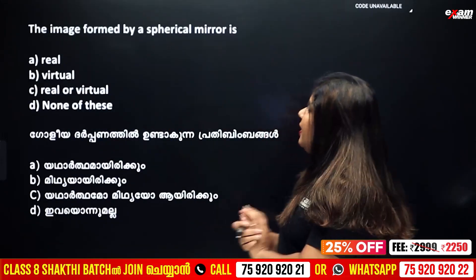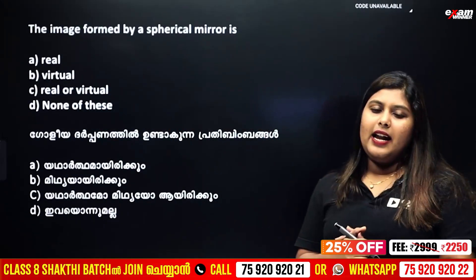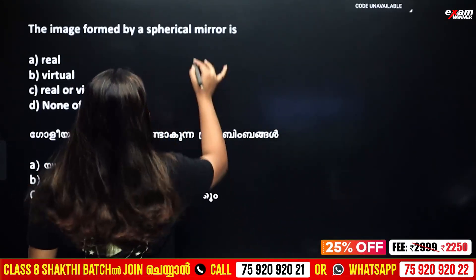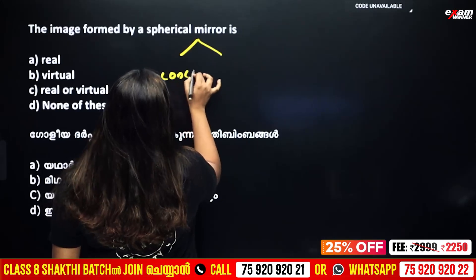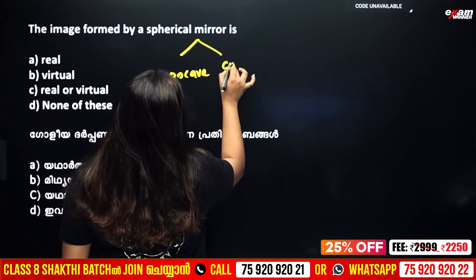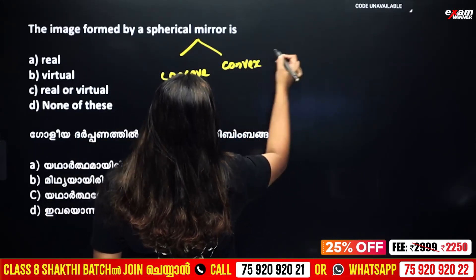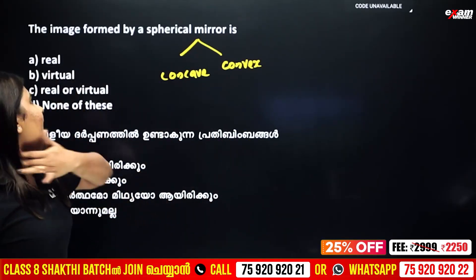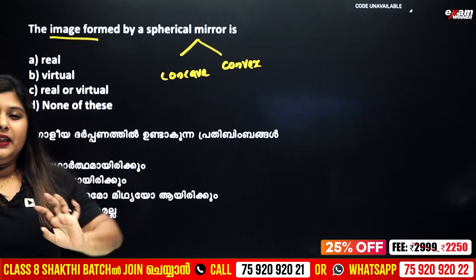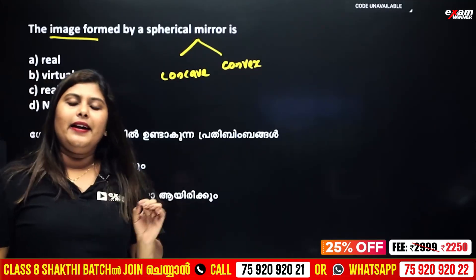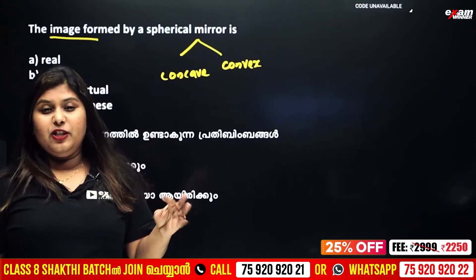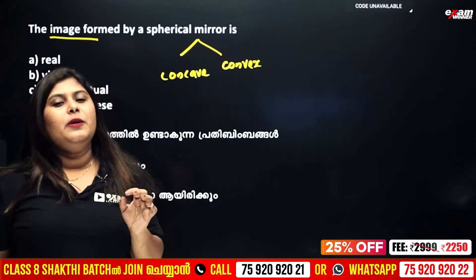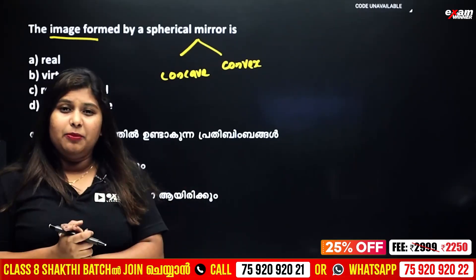Now, the image was formed by a spherical mirror. We know that there are two types of spherical mirrors. One is concave mirror and one is convex mirror. Convex mirror and concave mirror — these are the two spherical mirrors.